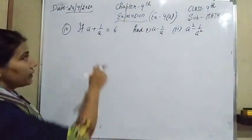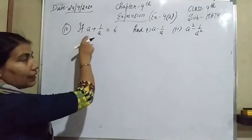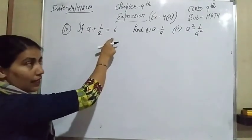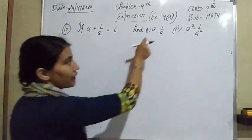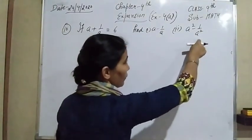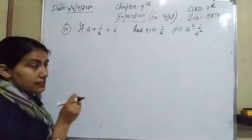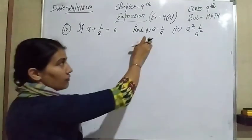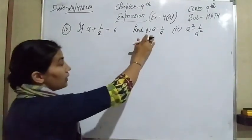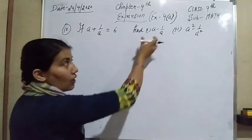We have given the value of A plus 1 over A equal to 6, and we have to find out A minus 1 over A and A square minus 1 over A square. In these types of questions, you just have to look at what we have to find out and start from there.